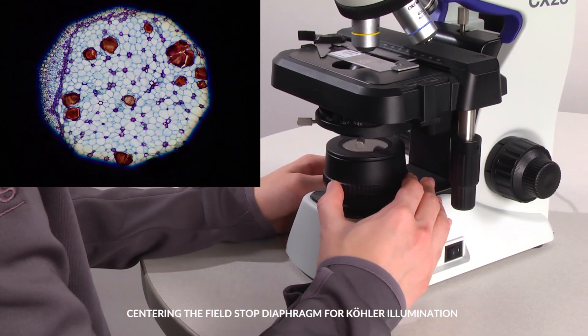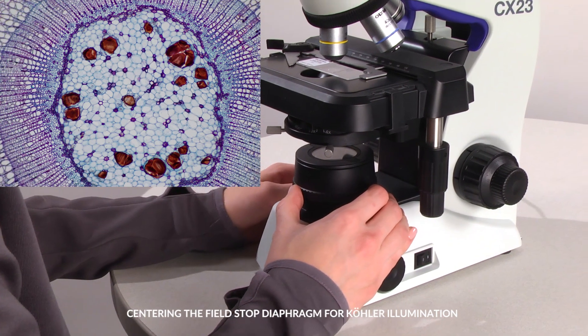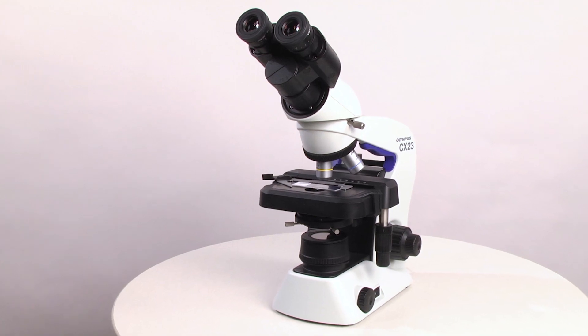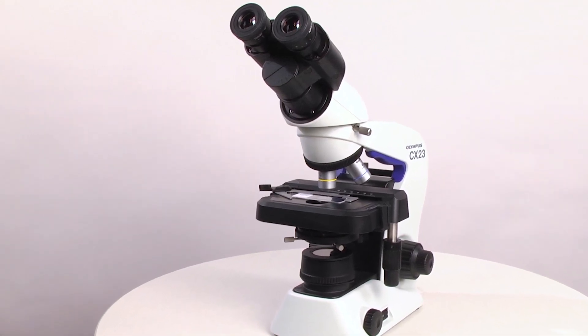Rotate the field diaphragm ring to the left to open it until you see your specimen in the whole field of view. Your CX-23 microscope is now properly aligned and ready for viewing.